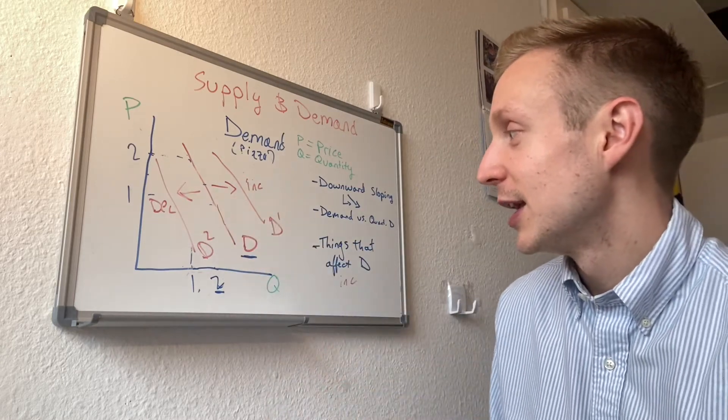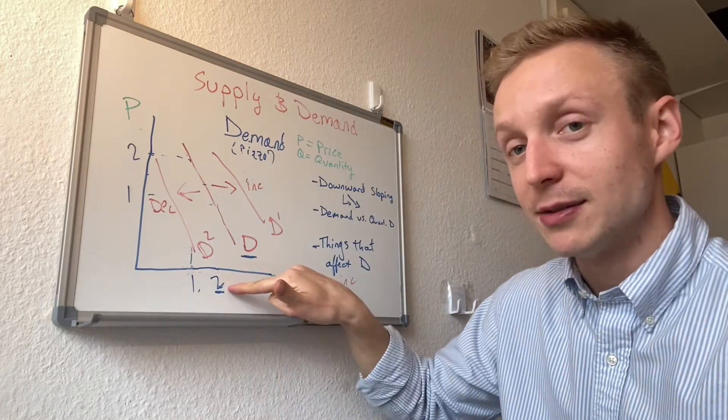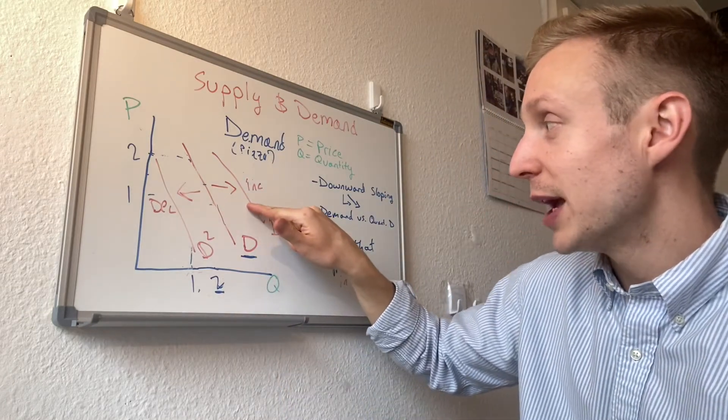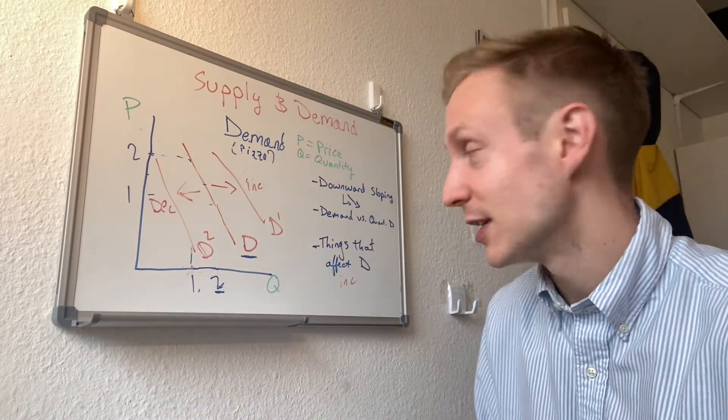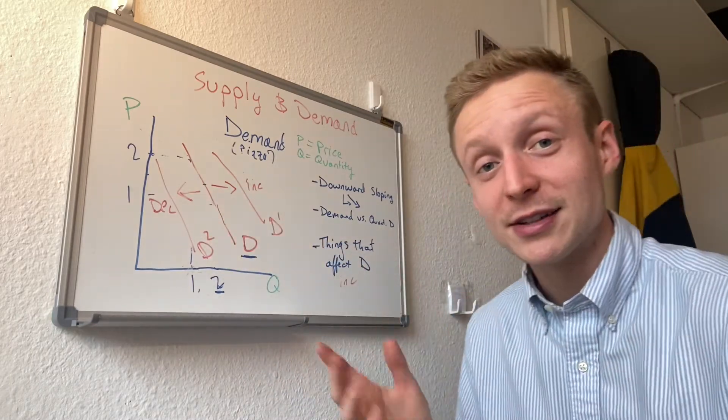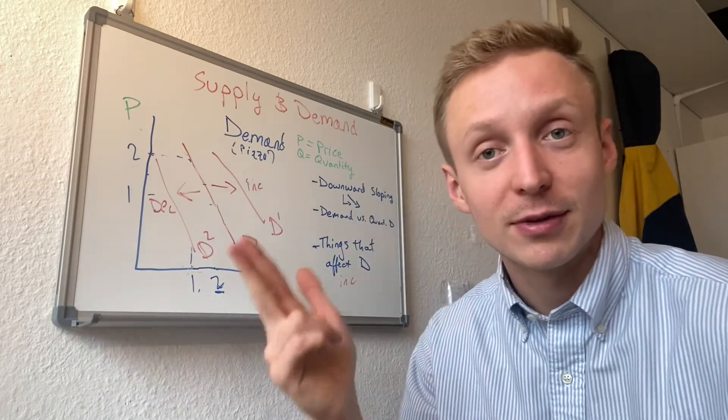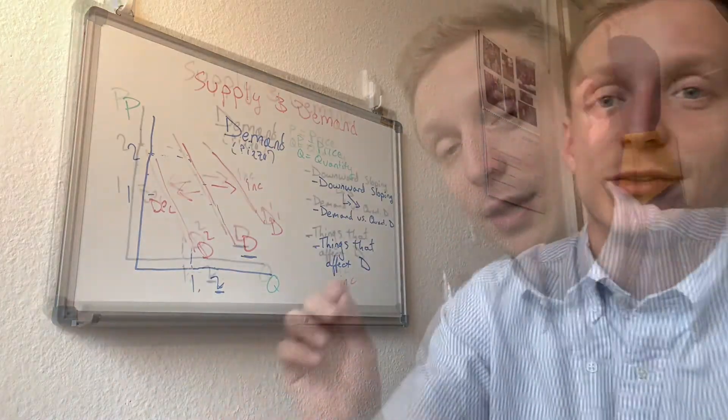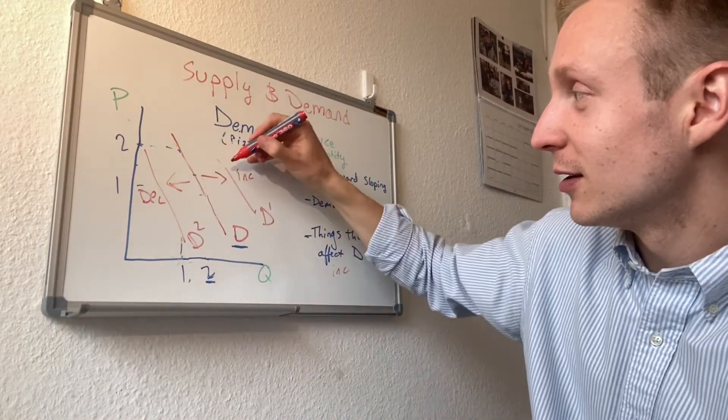So big points: demand versus quantity demanded. A shift to the right is an increase in demand. A shift to the left is a decrease in demand. And what affects demand? Well, income, tastes and preferences, price of related goods, etc. And a quick point: these slopes are the same. I drew this pretty poorly, but the slope does not change when there is an increase or decrease in aggregate demand.